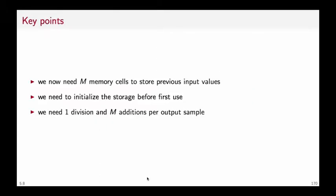The implementation of the moving average teaches us a set of lessons that are very close to what we learned with the leaky integrator. In this case, we need M memory cells to implement the filter. The memory requirements are higher for the moving average. We need to initialize the cells once again before we first use them, and for each output sample, we'll need now M additions and one division. So when M grows, you can see that both memory and computational requirements grow as well.